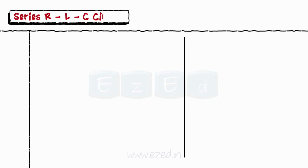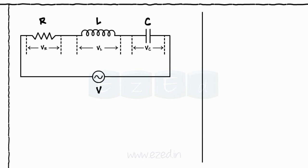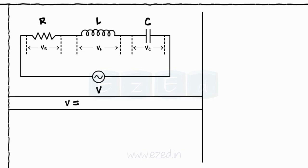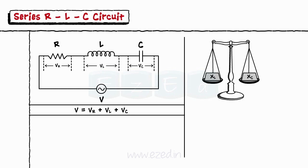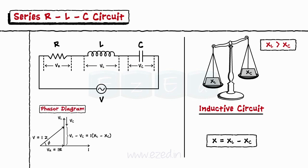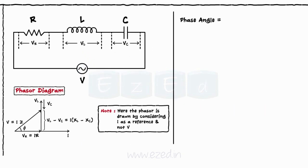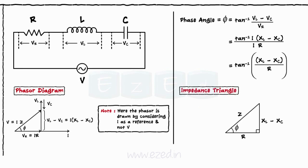When all three components are connected in series across the AC supply, we get the series RLC circuit. The total supplied voltage equals the sum of the voltage drops across each component. If the reactance of the inductor is greater than the reactance of the capacitor, the circuit behaves as an inductive circuit, the net impedance is given as XL minus XC, the current lags the voltage by angle phi, and phi equals tan inverse of (XL minus XC) upon R. The impedance triangle and phasor diagram are drawn as shown.